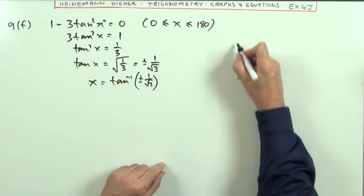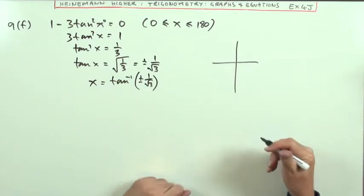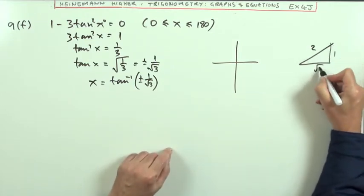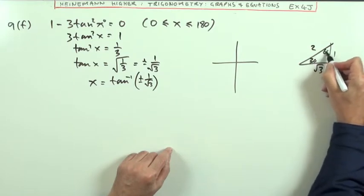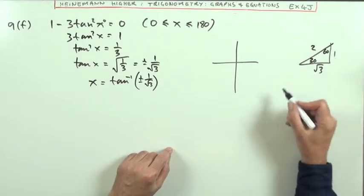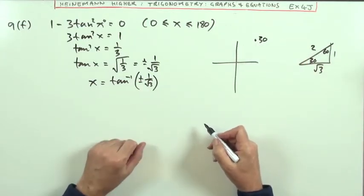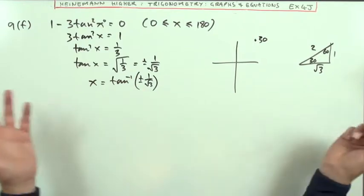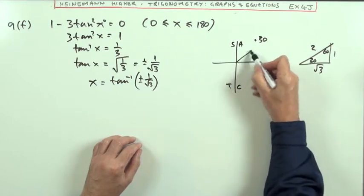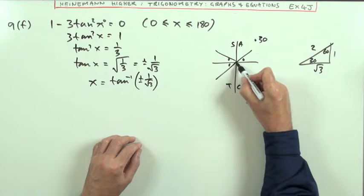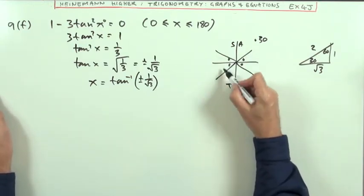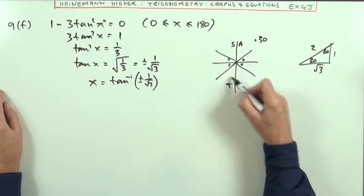Again, the plus or minus will be taken care of by the CAST diagram. And the 1 upon root 3 doesn't require a calculator because it's one of those two common triangles, 1, 2, root 3. Now we're in degrees, so that's easy. That's 30, that's 60. And the tangent for 1 to be the opposite is 30 degrees. So we're looking at 30 degrees. And it's the same again. The tangent is to be both positive and negative. Well, that just means it's going to go into all the quadrants, all sine, tan, cos. Tangent positive, tangent negative, it just means it's going to be in all positions. So I'm going to have 30, 30 short of 180.